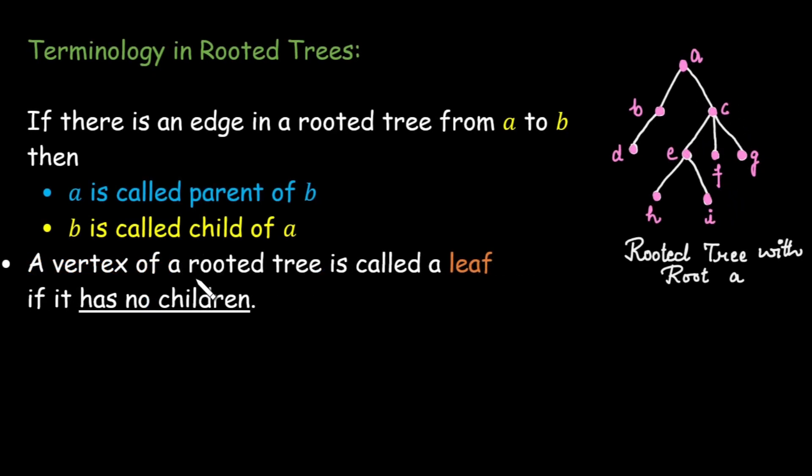Another important term in a rooted tree is the concept of leaf and internal vertices. A leaf is a vertex that has no children. In other words it is a vertex at the end of the branches in a tree. Like in this case the leaves are d, h, i, f, g.